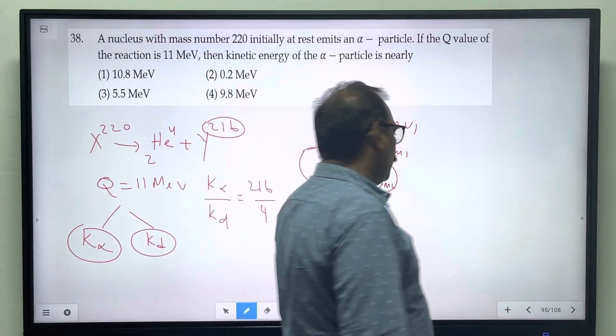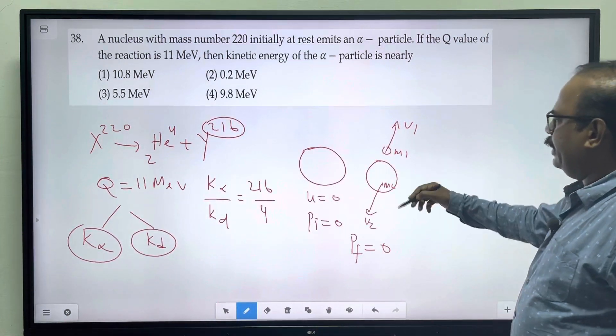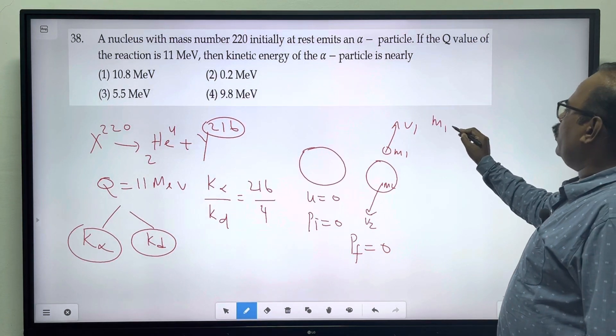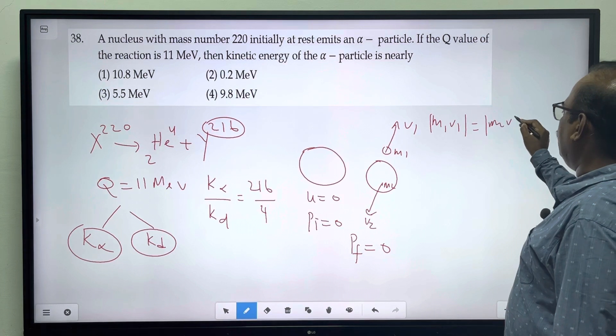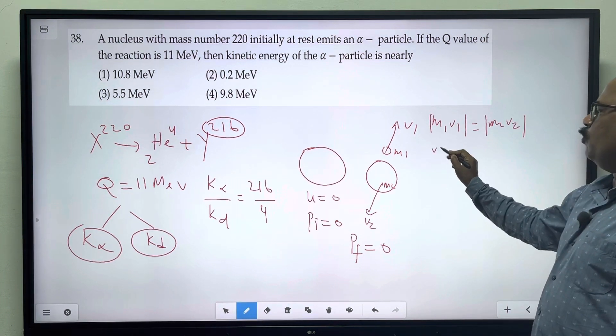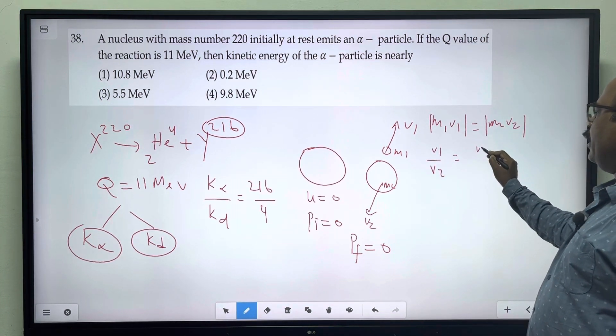Initial momentum equals final momentum. It will be equal to m1 v1 in magnitude. It is in opposite direction. The velocity ratio v2 by v1 is equal to m2 by m1.